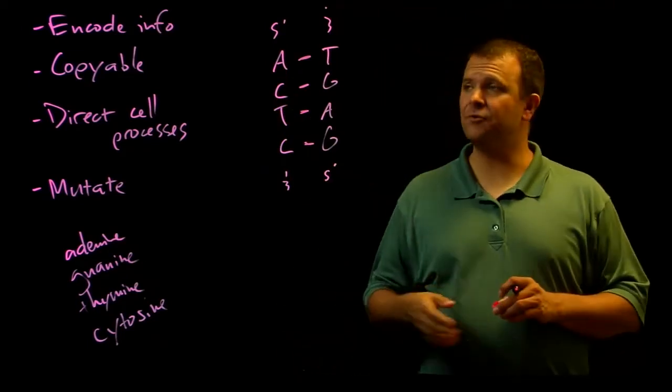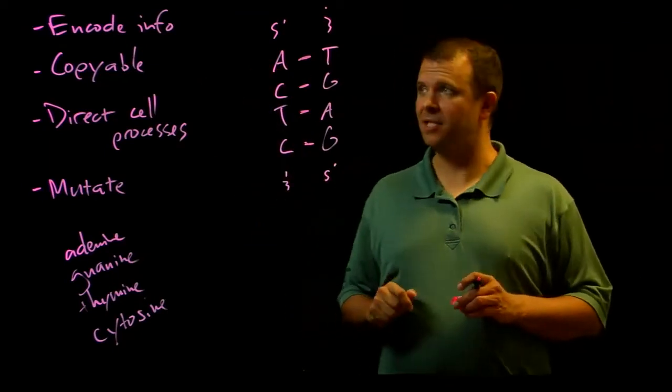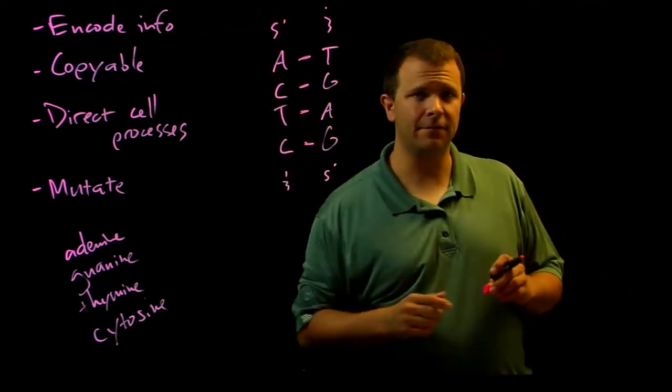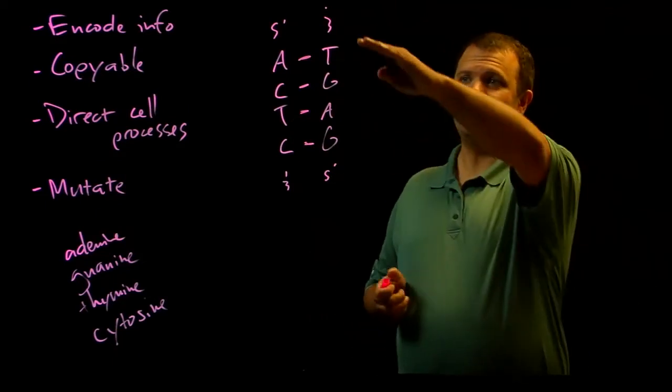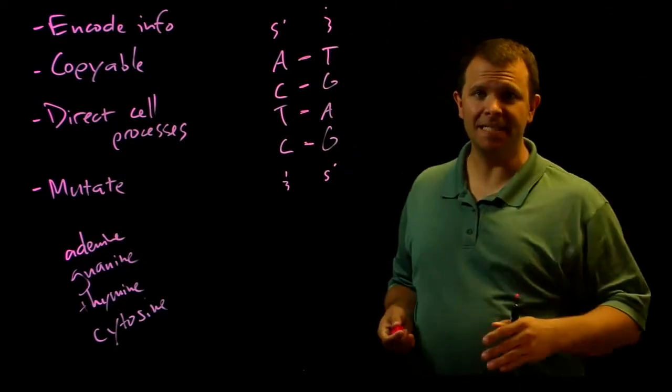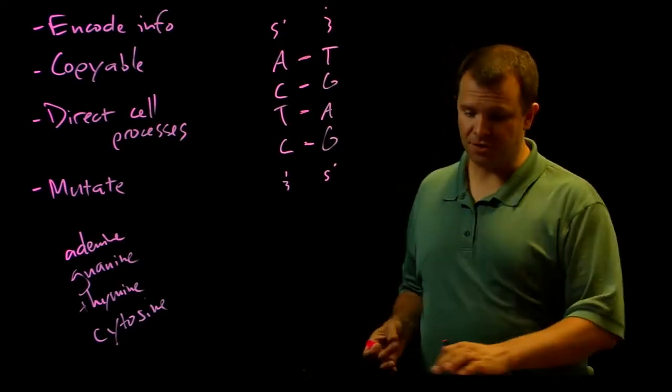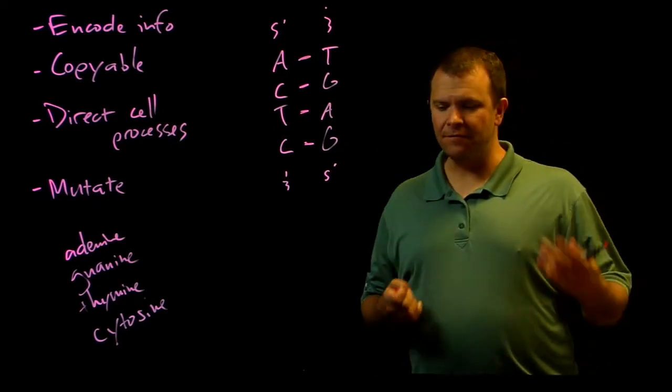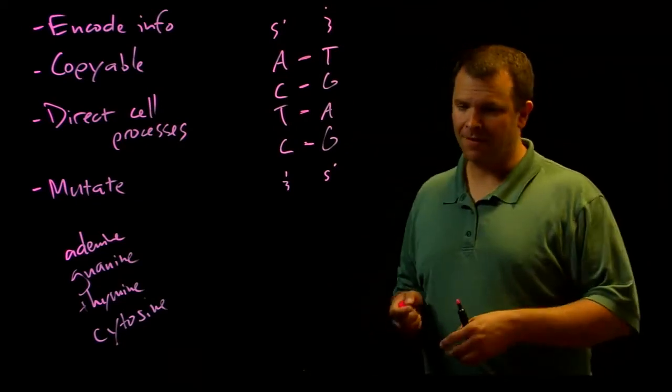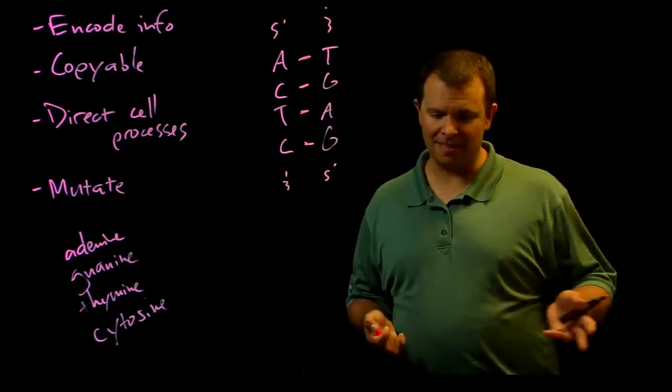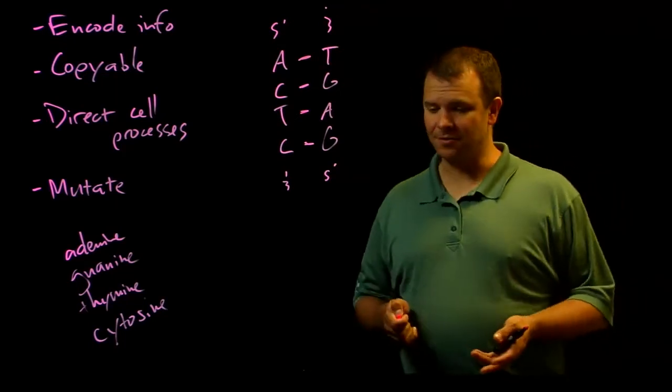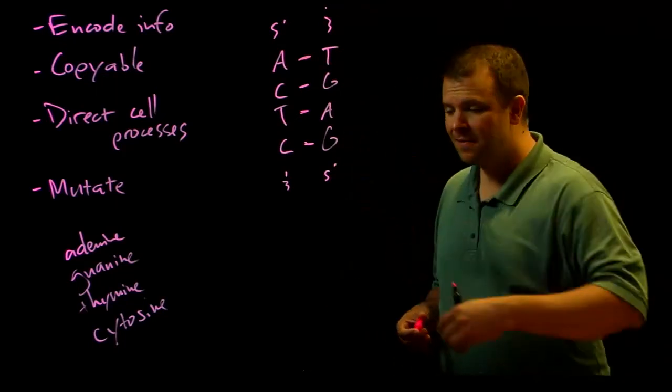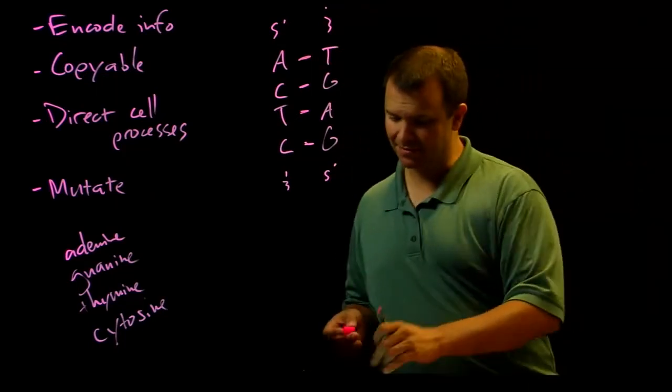And so that addresses two of these questions here. How is information encoded? Well, it's encoded in the sequence of bases that are attached to the nucleotides. This is like information in a computer. An image in a computer, for example, is encoded by a sequence of ones and zeros. And instead of that, here, the information is encoded in a sequence of bases.